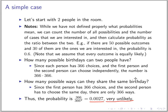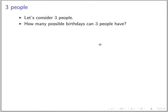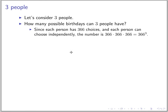Now let's increase the number of people. Suppose we have three people. How many possible birthdays can three people have? We can use the same argument: everyone has 366 choices and they can pick independently. So the total is 366 cubed.